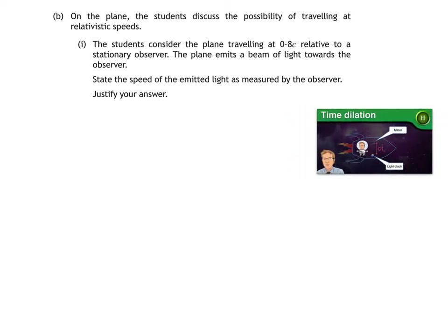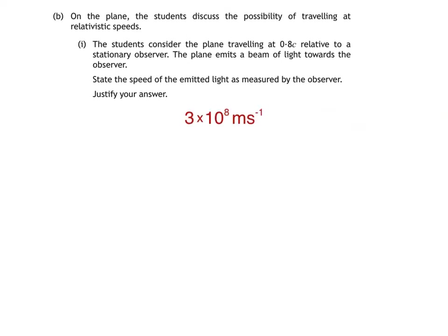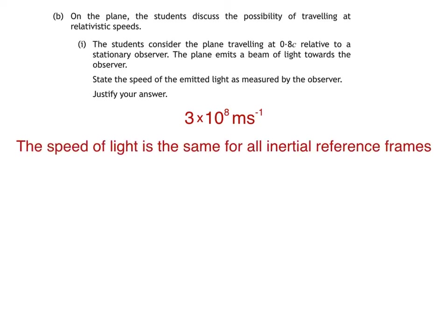If you've watched this video, you'll have heard me state the two postulates of special relativity. Firstly, that the laws of physics are the same in inertial reference frames, and secondly, that the speed of light in a vacuum is the same in all inertial reference frames. As long as the plane isn't accelerating with respect to the stationary observer on Earth — as long as they're moving with constant velocity relative to one another — then the plane and the Earth are inertial reference frames. That means the stationary observer also measures the speed of light to be 3×10⁸ metres per second. To justify your answer, we just say that the speed of light is the same for all inertial reference frames. It sounds like a simple statement, but it has some far-out consequences.